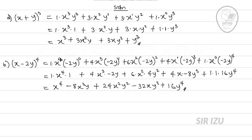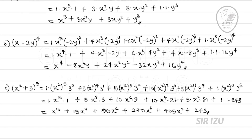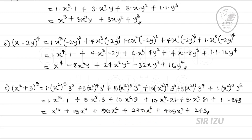You can try (c) on your own. For (c): (x² + 3) all raised to power 5, the answer is x¹⁰ + 15x⁸ + 90x⁶ + 270x⁴ + 405x² + 243. You can also try the following exercises on your own.